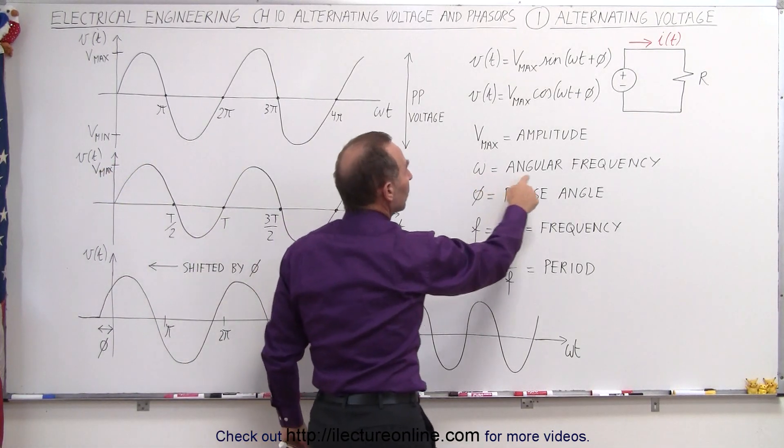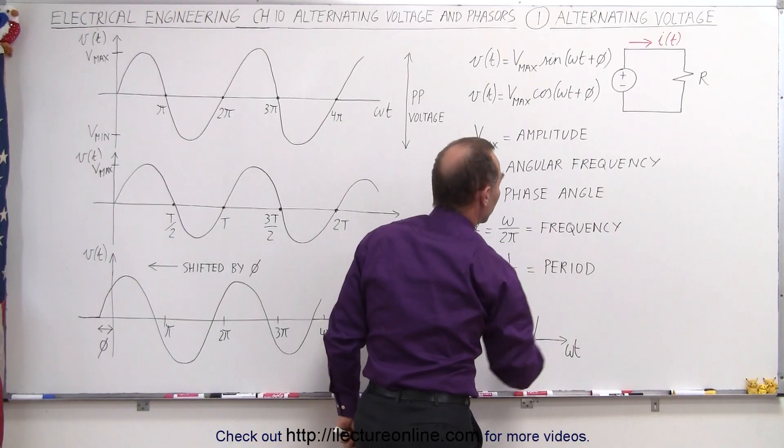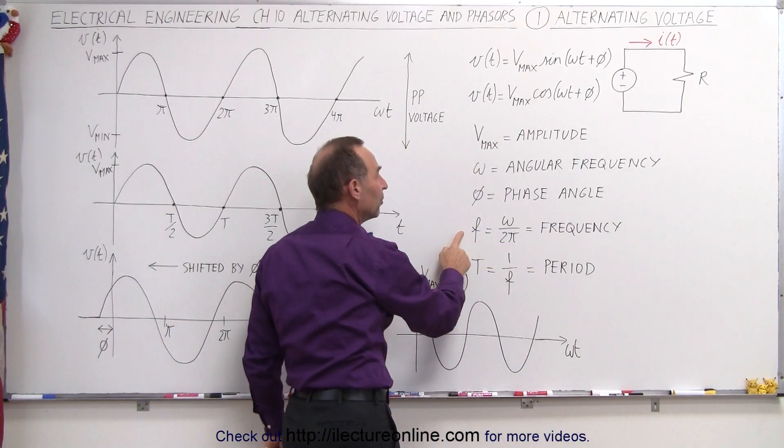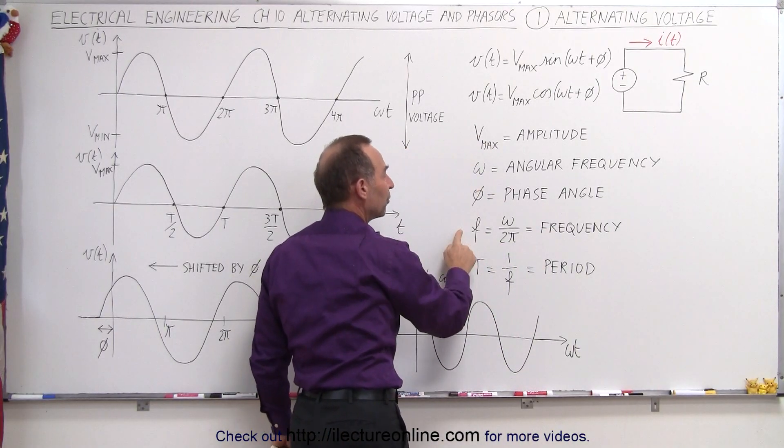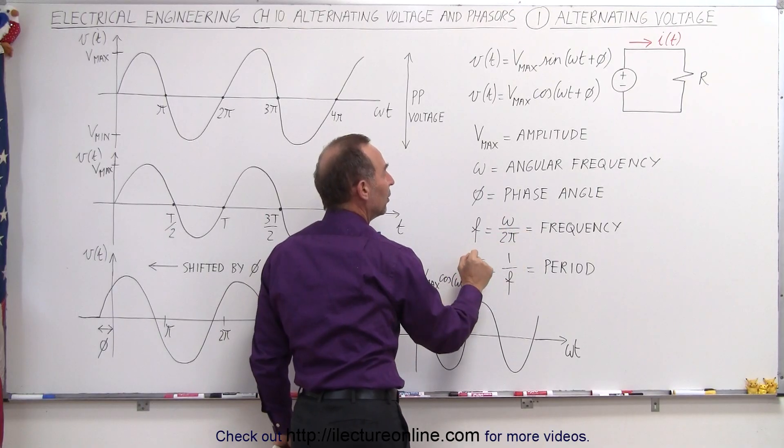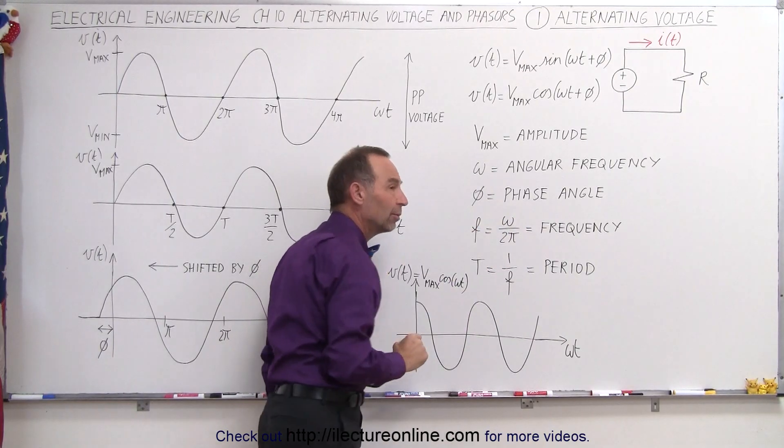We call omega the angular frequency. We also have what we call the frequency. So what's the difference? The difference between those two is 2π. You can see that omega would then be 2π times the frequency.